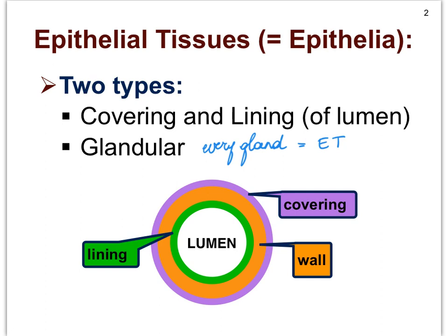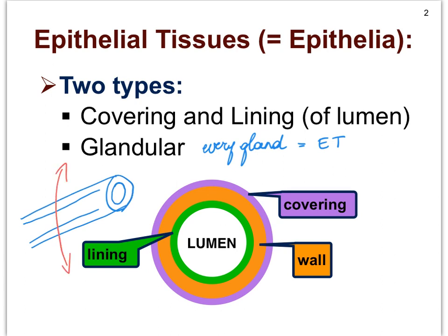Let's say that we cut through a hollow organ. This could be a blood vessel, the intestine, the stomach, the uterus — it doesn't really matter. We're looking at a hollow organ and we're going to make a cross section, slice through it and look at it head-on. The cavity of any hollow organ we're going to refer to from now on as the lumen.